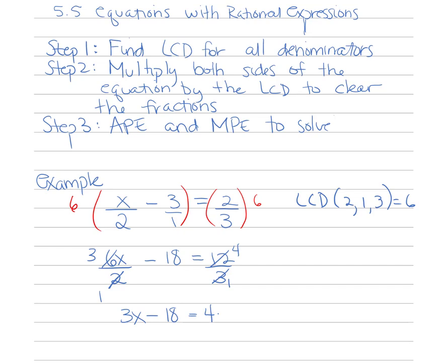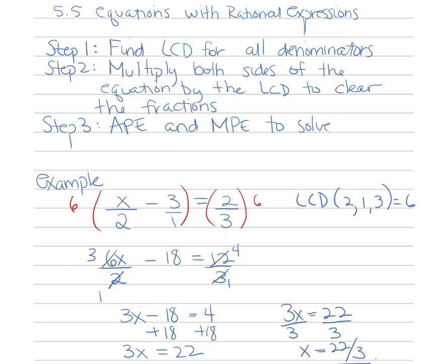Using the addition property of equality, add 18 to both sides: 3x equals 22. Dividing by 3, therefore x equals 22 thirds.